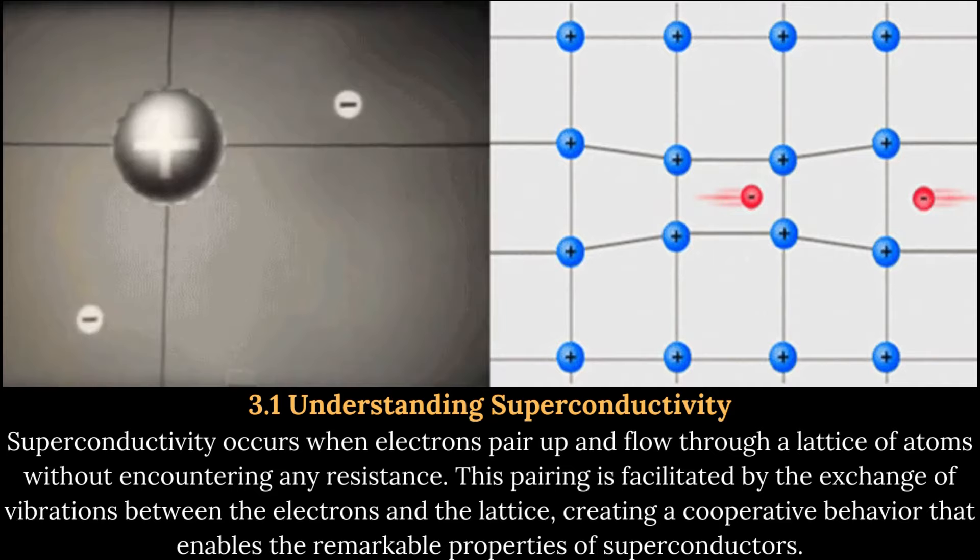Stability and Control Issues: Another challenge with quantum levitation is maintaining stability and control. The slightest disturbance can disrupt the levitation, and achieving precise maneuverability can be a complex task. Ensuring a stable and controlled levitation platform is vital for practical applications, as any instability could cause objects to fall or collide unexpectedly.